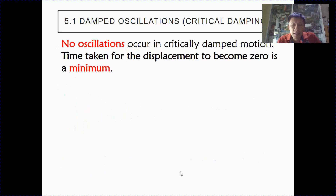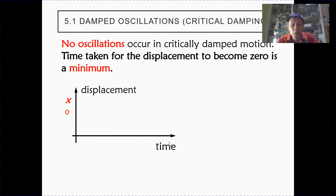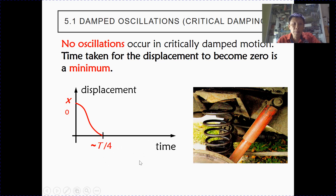For critical damping, no oscillations will occur — the displacement will not go into the opposite direction. The time taken for displacement to become zero is a minimum; it goes to zero in the quickest possible time, usually about one quarter of a period. An important application of critical damping, as mentioned in the syllabus, is the car suspension system.